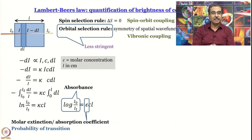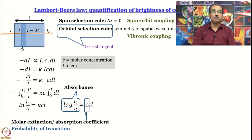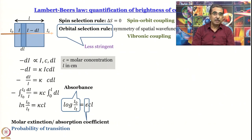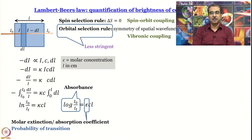Molar extinction — or molar absorption — coefficient tells us about the probability of transition. It is an experimental parameter, and with a bit of theory one can find a relationship between this experimentally observed quantity and the theoretically calculated probability of transition. This is worked out in many standard textbooks — Barrow is one reference, though it is out of print; you could study from McQuarrie and Simon's book or Atkins' Physical Chemistry. For more depth, Banwell's Molecular Spectroscopy and Greybeel's Molecular Spectroscopy are also recommended.